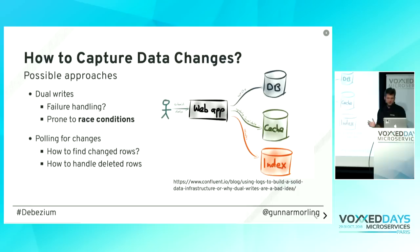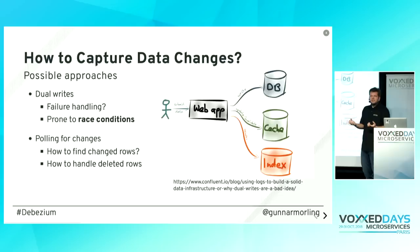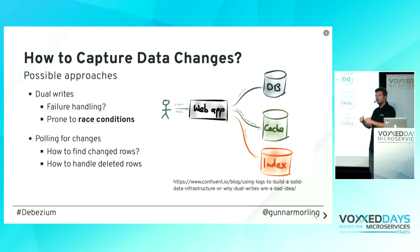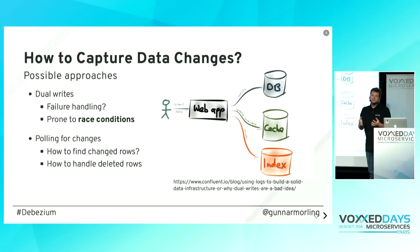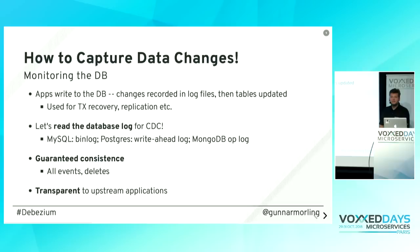Another approach is polling: go to your database frequently and ask what has changed since last time. The problem is the dilemma of how often to poll — more often means more current data but higher load on your database. Also you need columns in your model like 'last updated' timestamps, which impacts your model. And fundamentally, how do you identify deletes? If something was deleted since you last polled, there's no way to find out. So polling is an approach in some cases, but it's not ideal.